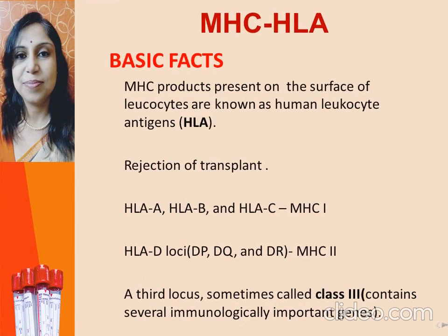HLA are the MHC products present on the surface of the leukocyte. There are three genes — HLA-A, HLA-B and HLA-C — that code for class 1 MHC protein, whereas HLA-D determines the class 2 MHC protein at three different loci: DP, DQ and DR. There are at least 47 HLA-A genes, 88 HLA-B genes, 29 HLA-C genes, and more than 300 HLA-D genes. However, any individual inherits only a single allele at each locus from each parent, so no one can make more than two class 1 and class 2 proteins at each gene locus.